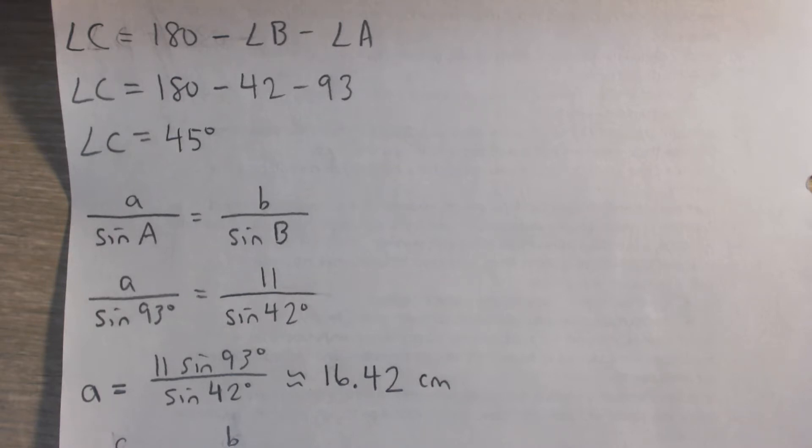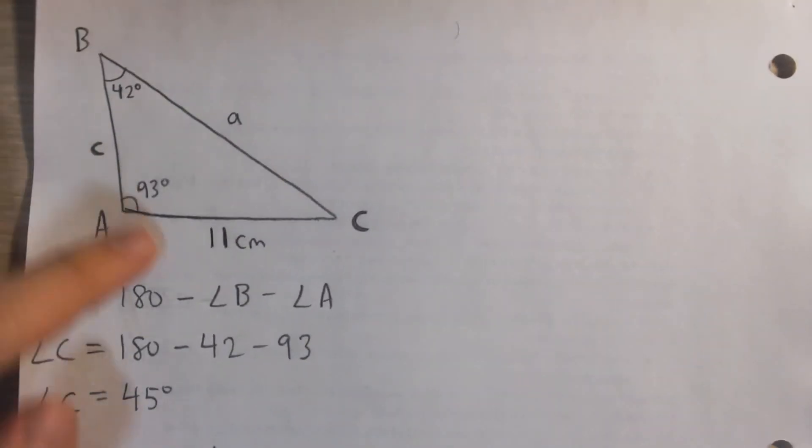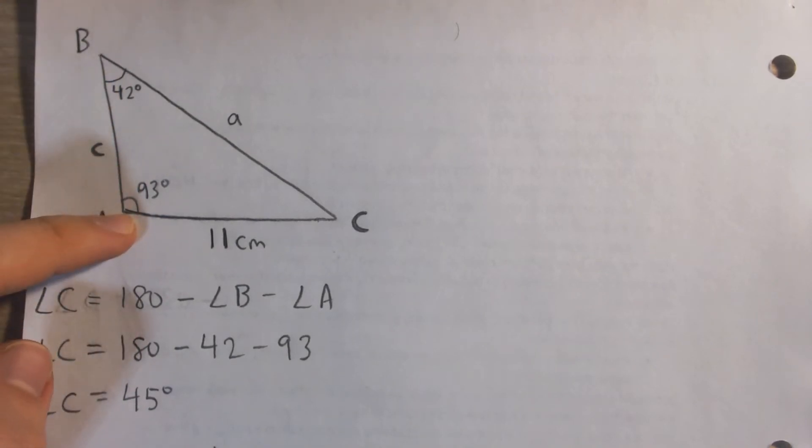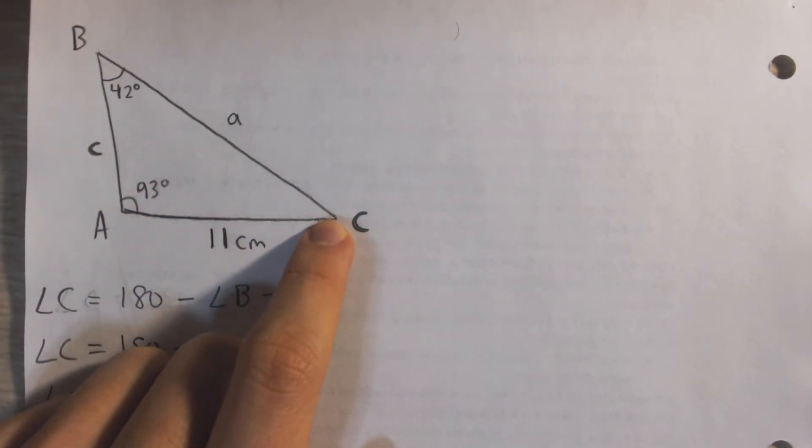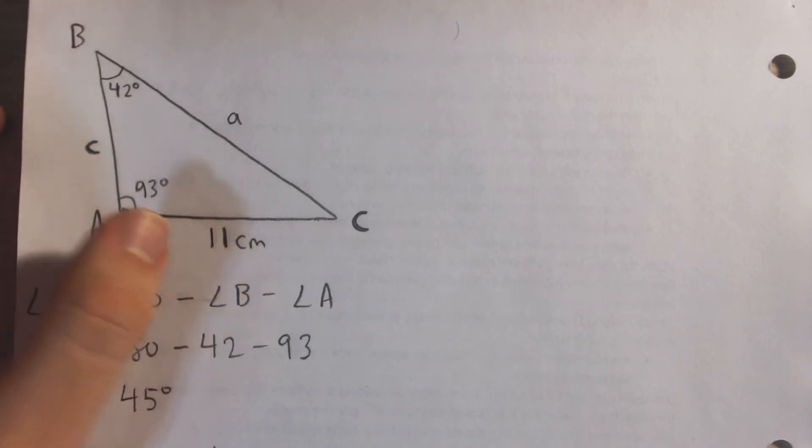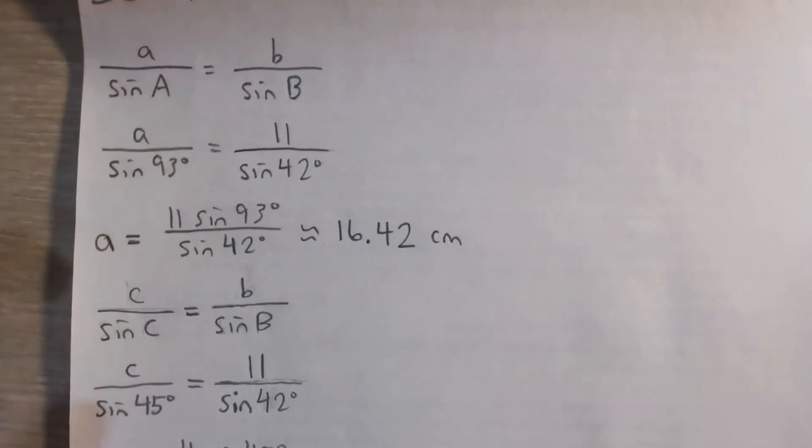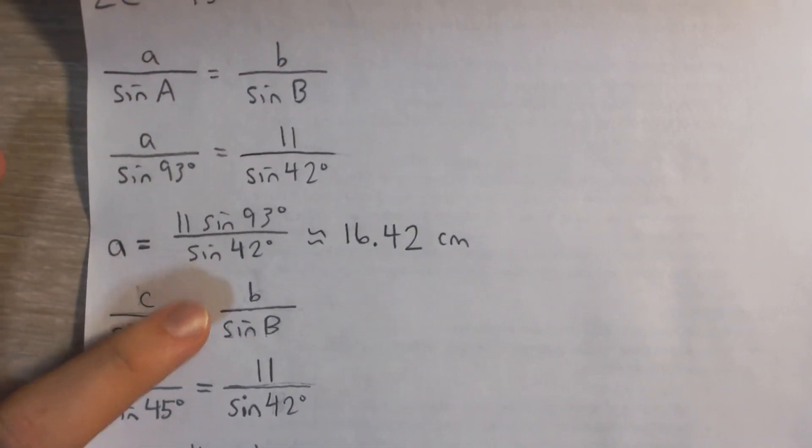Okay. So that's side length a. For side length c here, we can do a similar idea because we know the angle opposite and we know these two. We're going to use the same ones. So we can say c over sin C equals b over sin B.